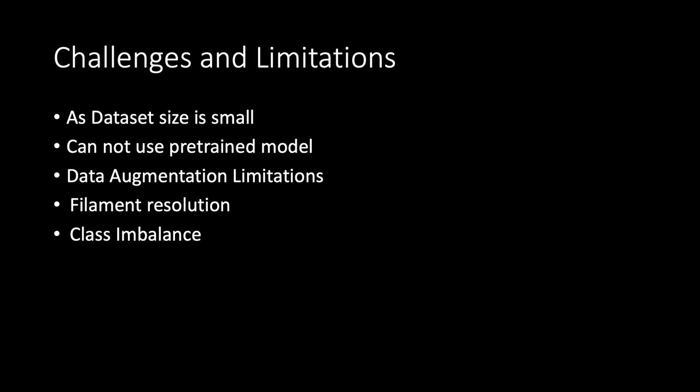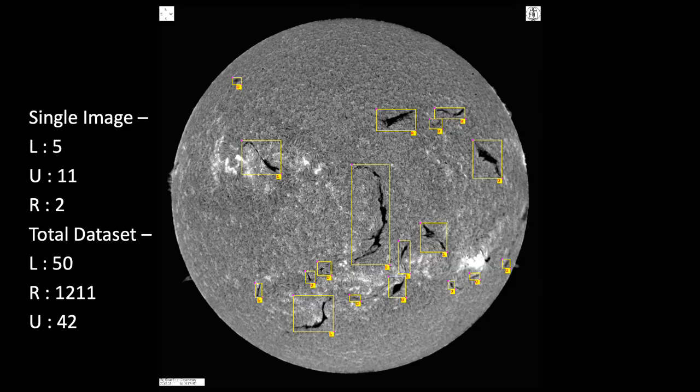One other major challenge is the class imbalance. Data set is class imbalanced if the distribution of its classes is skewed. As seen in this particular image, the number of samples with unidentified chirality is much higher than the other two classes. As in this single image, the unidentified filaments are 11, but the left and right are 5 and 2. And the same trend follows in the whole data set. In class imbalance, the classifier tends to favor the majority instances and therefore minimize the overall training error solely because of high true negative rate, i.e. the correct classification of majority instances. Such models, however, fail to correctly classify the minority instances during testing.